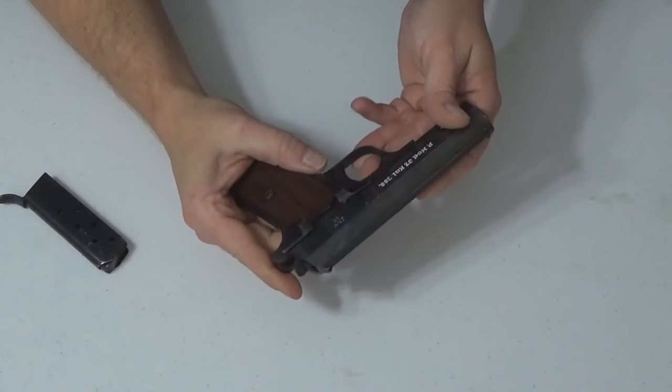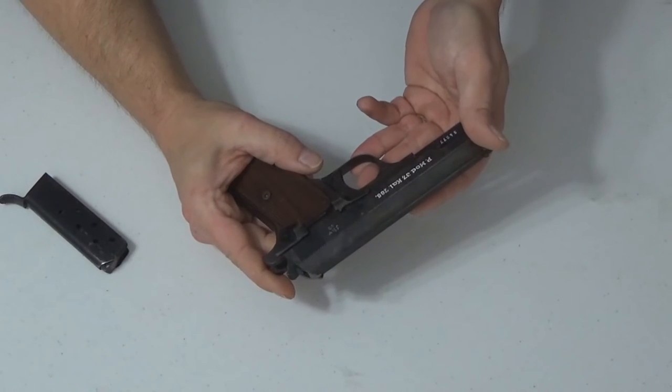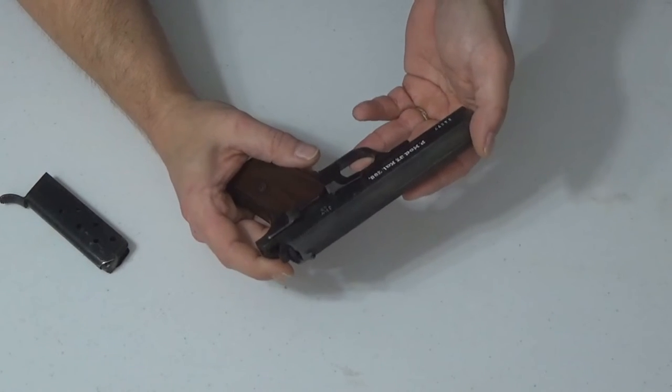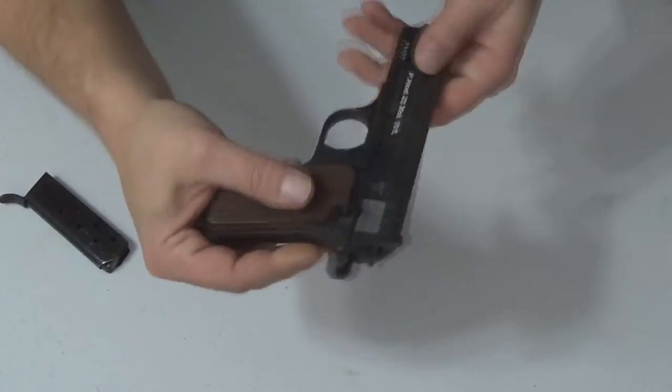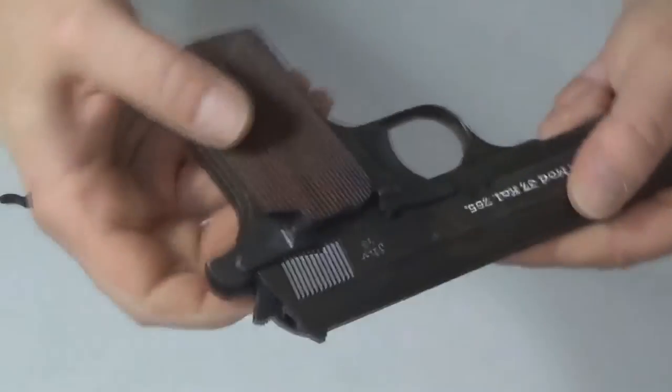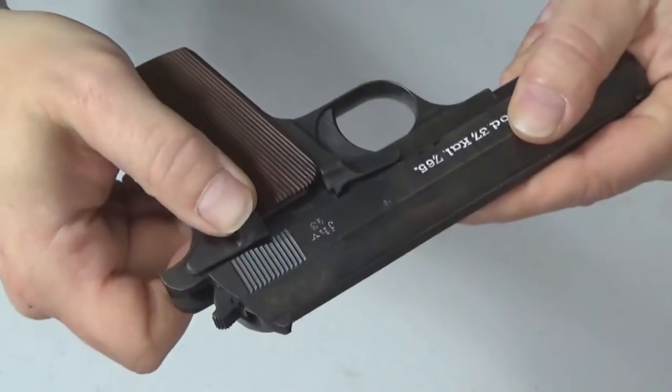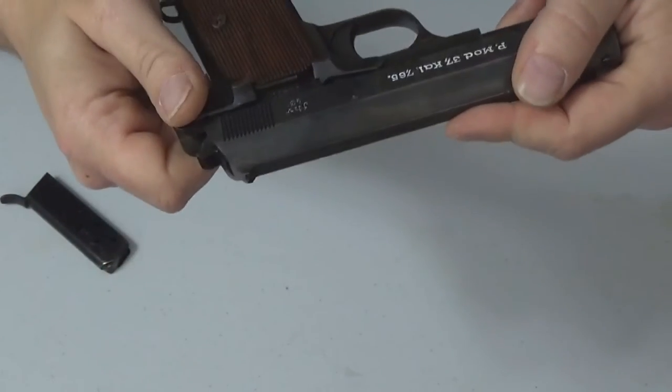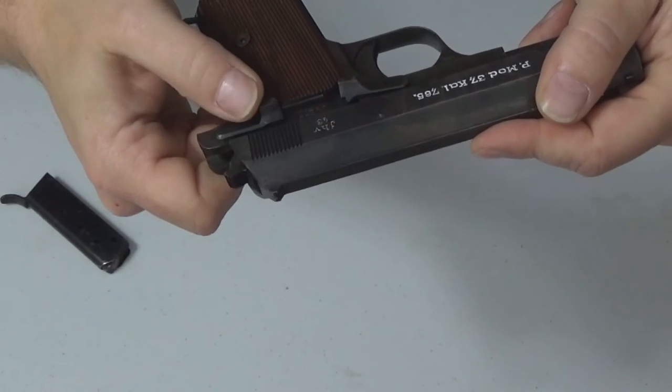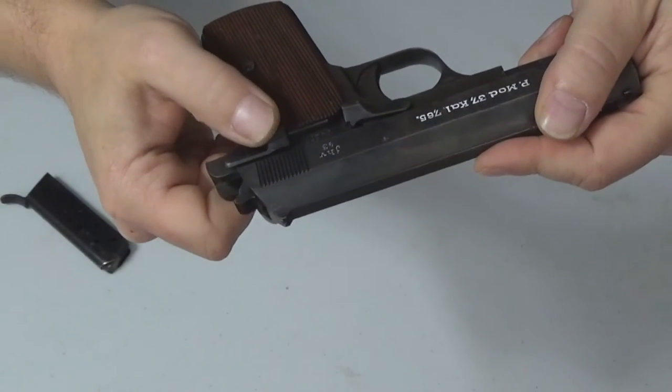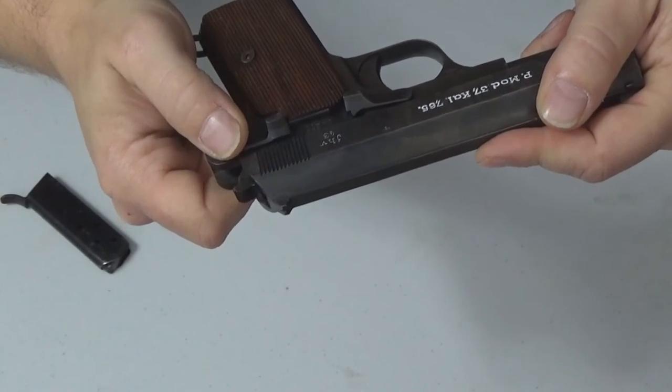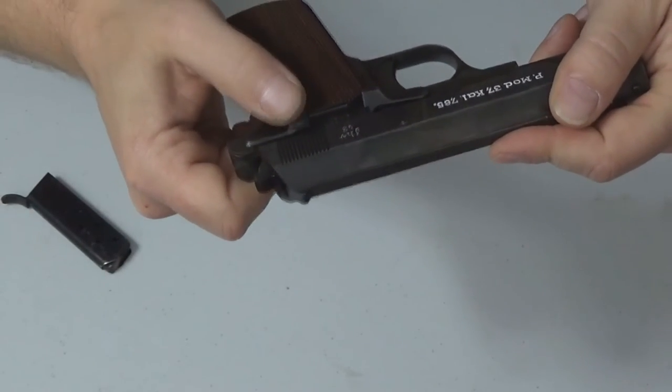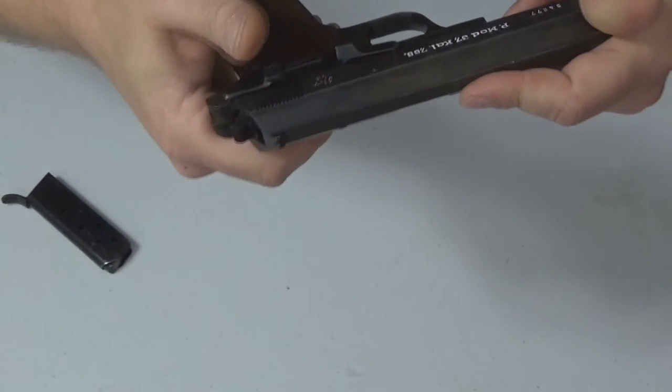One other thing, the only thing different besides the caliber that the Hungarians use versus the Germans was the slide catch safety here. If you run into the difference between a Hungarian and a German Nazi contract is the addition of this safety catch. If it's not a Nazi contract 37M, it will not have this catch. That's the only two differences.